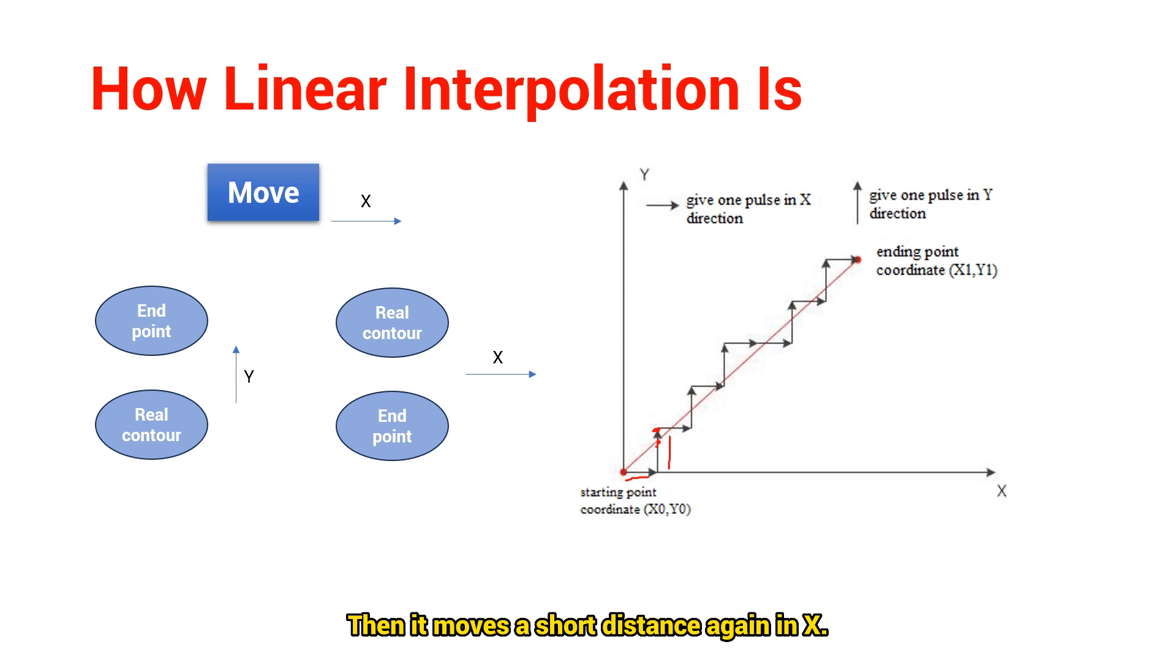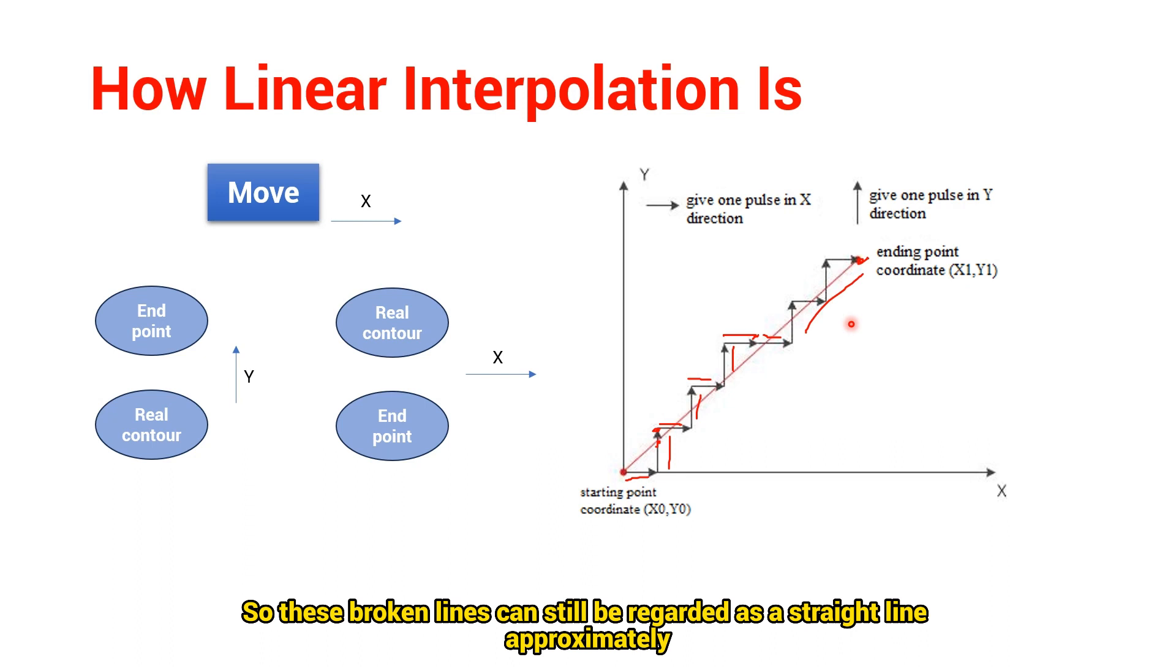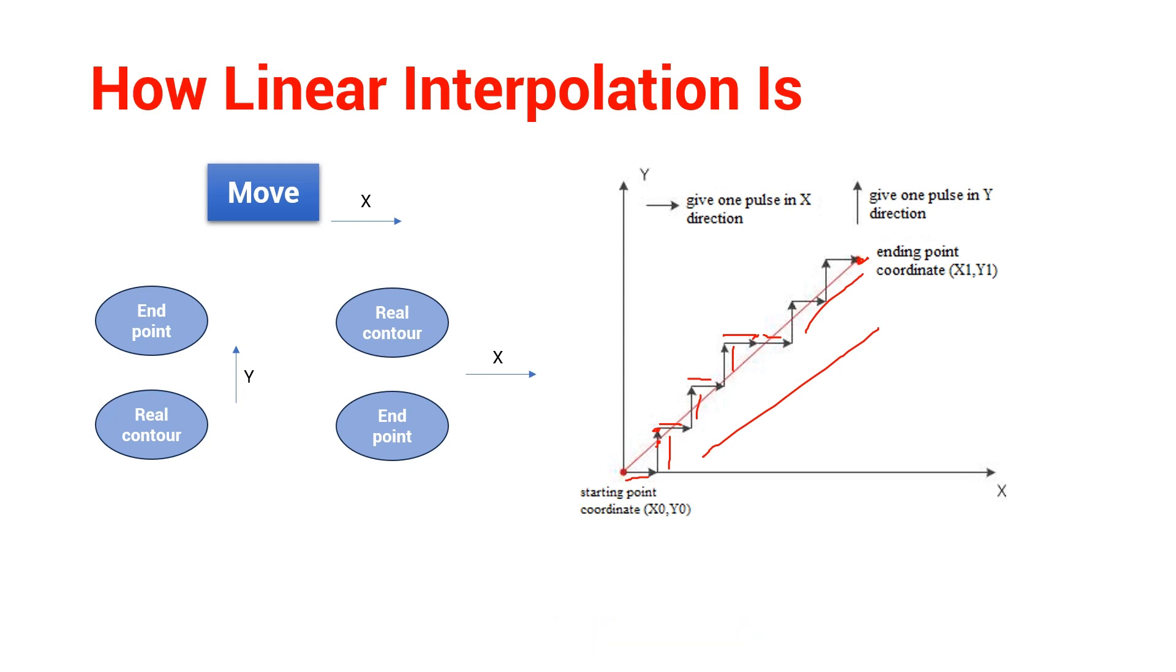Then, it moves a short distance again in x. So, it always moves like this until it arrives at the contour terminal point. It can be seen the actual is formed by splashing a segment of poly lines. Although they are poly lines, each broken line is very small that is within allowable accuracy range. So, these broken lines can still be regarded as a straight line approximately, which is the linear interpolation.